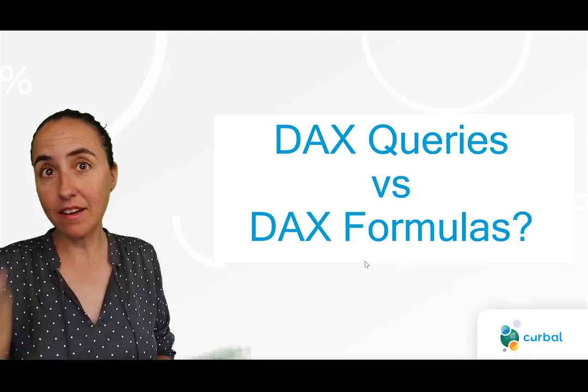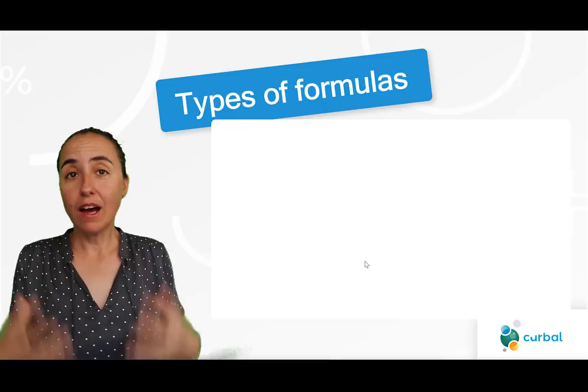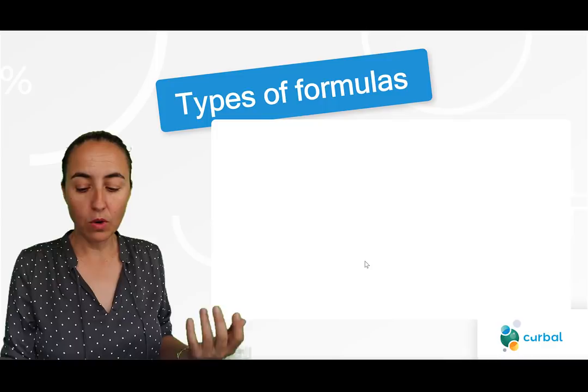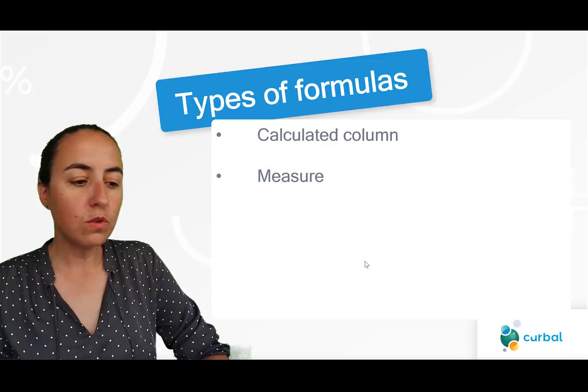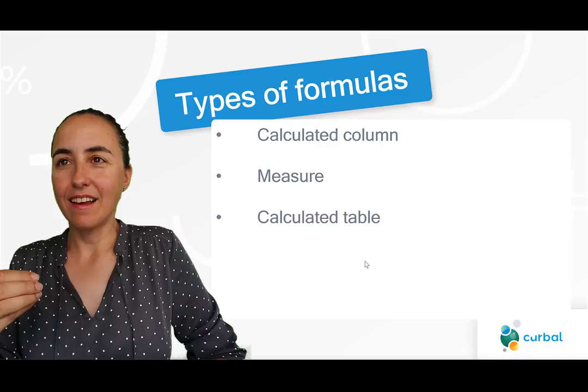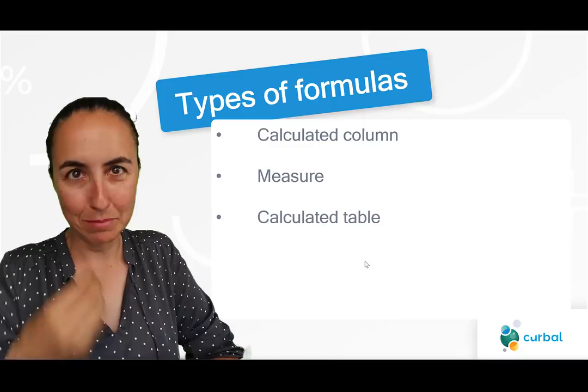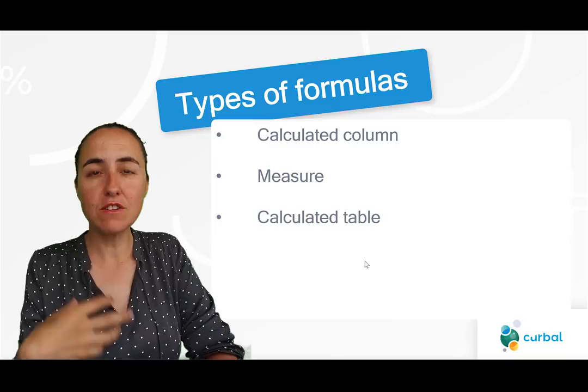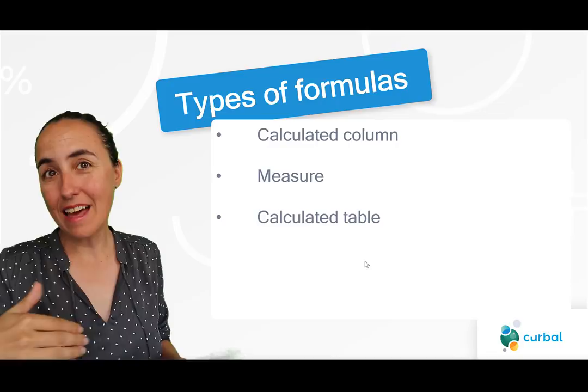What types of formulas can you do in Power BI? There are a few. You can do calculated columns, you can do measures, and you can do calculated tables. I've put them in the order of difficulty from the perspective of someone who works with Excel from a business perspective. As a business user, calculated columns were very intuitive for me. Measures less so. And calculated tables, not much, actually.